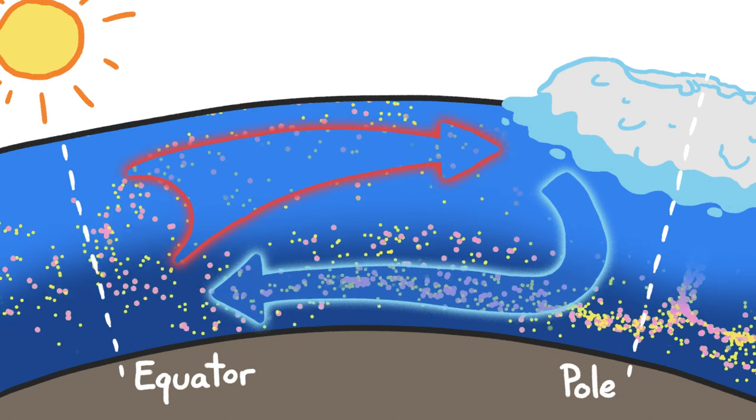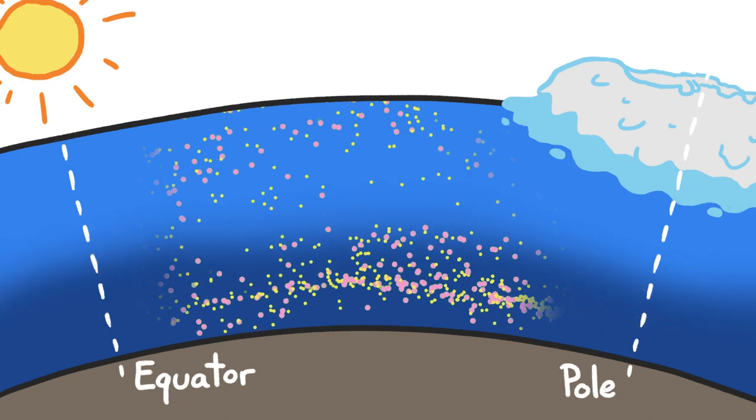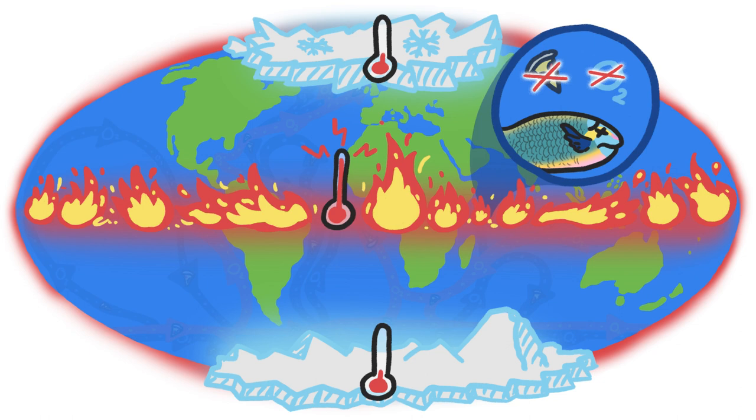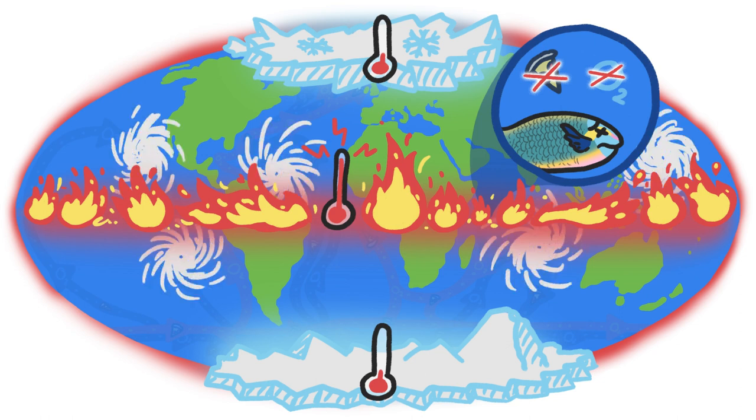But continued changes in ion concentration could stop the ocean's water exchange altogether. Marine life as we know it would cease to exist, the poles and the equator would become uninhabitable, and hurricanes would feed off all that equatorial heat, morphing into superstorms.